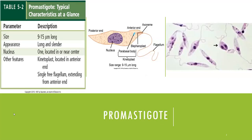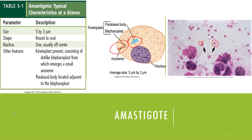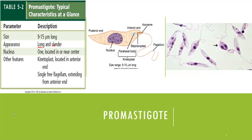On the other hand, the promastigote is the second morphological form, which is long and slender, with the nucleus located near the center. There is also a kinetoplast consisting of parabasal bodies and blepharoplast. In contrast to the amastigote — which is rounded with no flagella — the promastigote is long and slender with a flagella that allows the hemoflagellates to move.